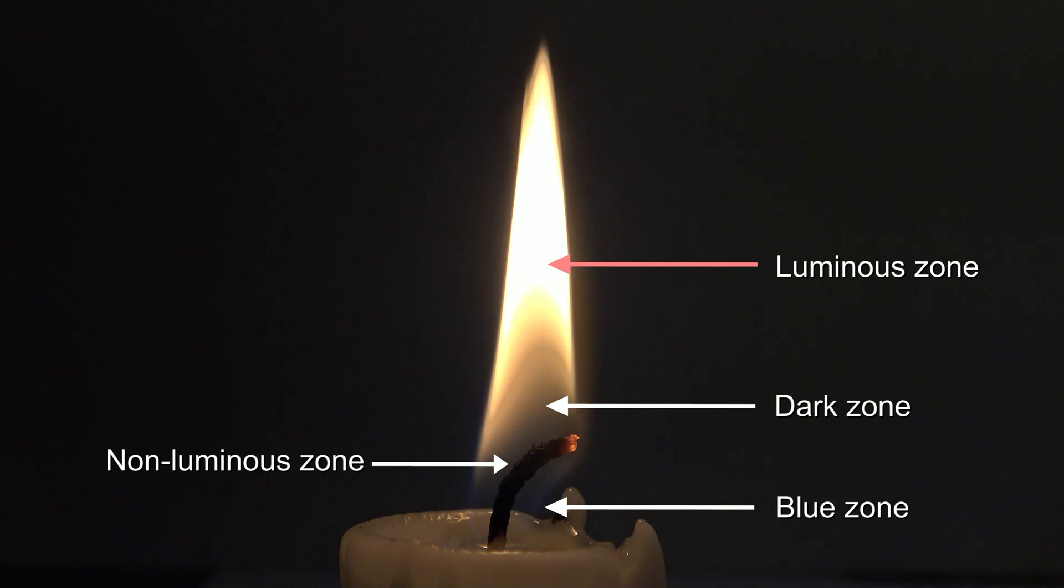The lack of oxygen comes from the outermost zone, which is spread around the flame. Here, the wax and soot particles are burned completely, which is why this is also the hottest part of the candle.